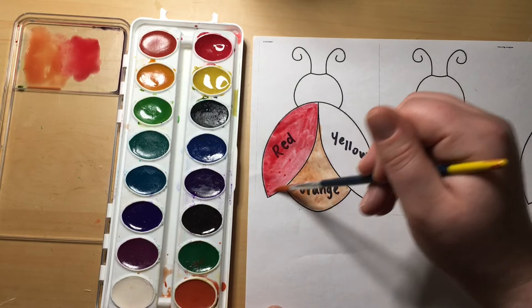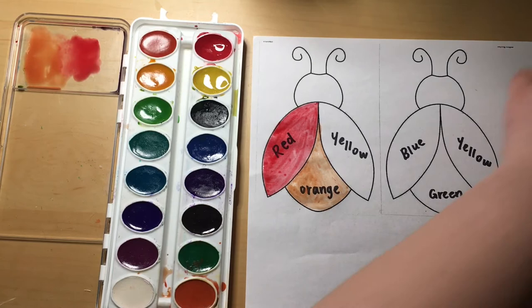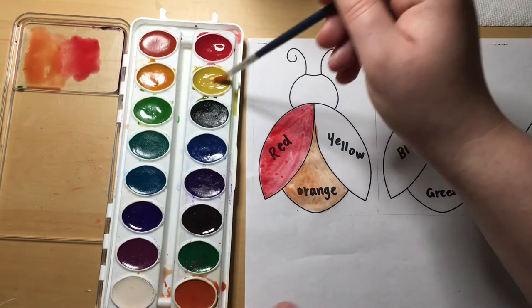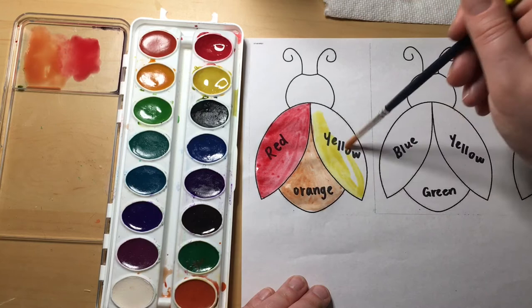Notice that I am cleaning my brush on my paper towel to make sure that there's not any more red paint left before I dip it into the yellow. So finish that one up and then we're going to move on to mixing green.